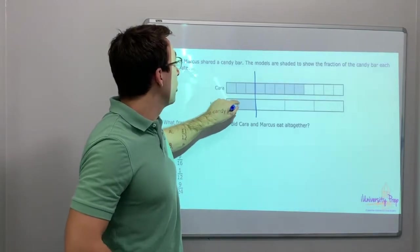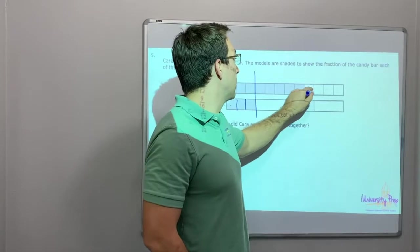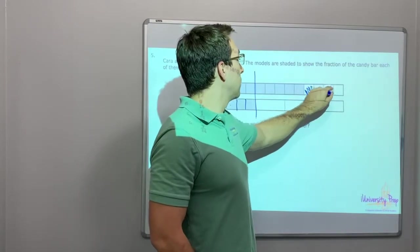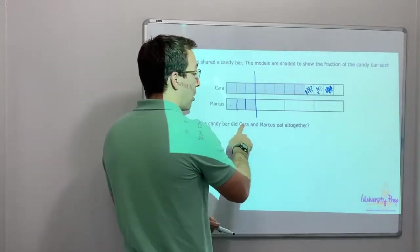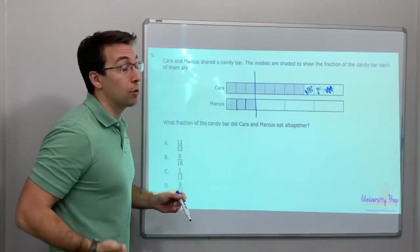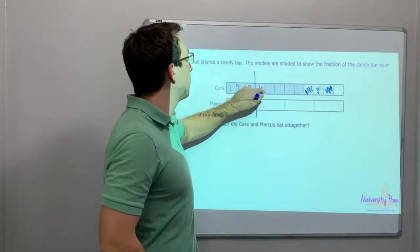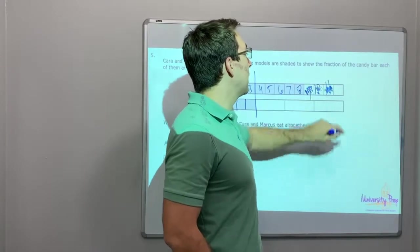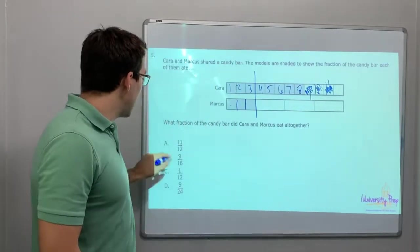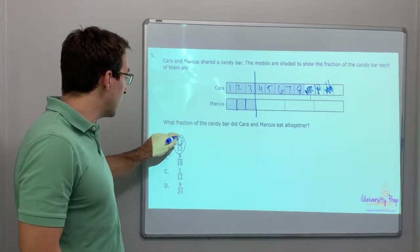Marcus got three squares, right? So let's just add them here. One, two, three. What fraction of the candy bar did Kara and Marcus eat all together? So we're adding them. All we have to do is count. One, two, three, four, five, six, seven, eight, nine, 10, 11. They ate 11. That's it. They ate 11 out of 12.